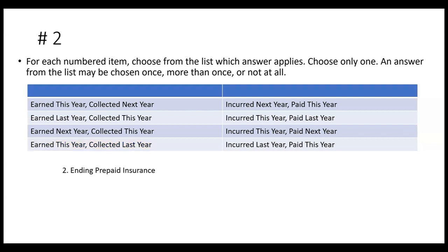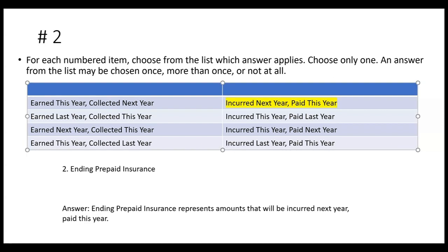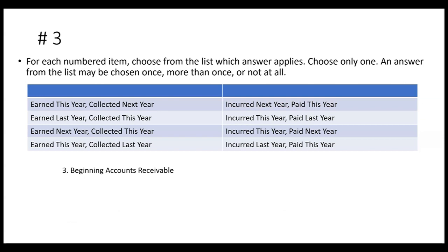Number two: ending prepaid insurance. Prepaid insurance at year end represents amounts that were paid this year but won't be incurred until next year. Ending prepaid insurance is next year's expense — we paid it this year and set it up as a prepaid by debiting prepaid insurance and crediting cash. The amount still in prepaid insurance at year end is the amount paid this year and incurred next year.